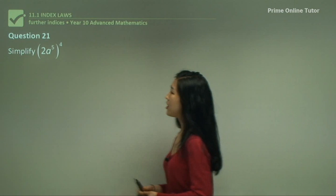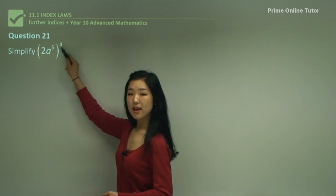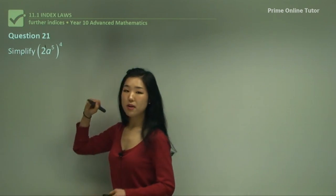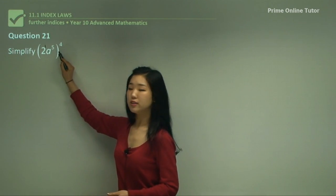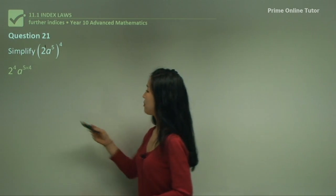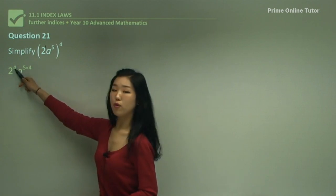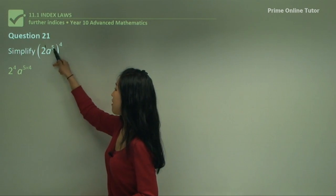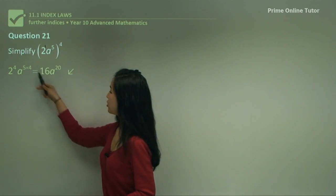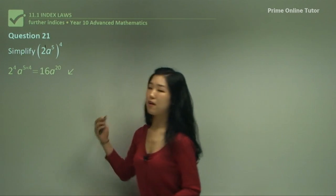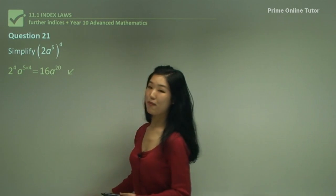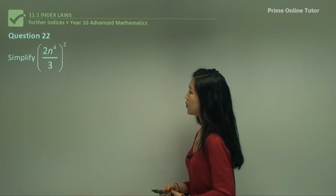Question twenty-one. Remember to multiply the two indices together, but if you have another term — see how it's 2 to the power of 1 — you must multiply 1 with 4 as well. You're multiplying the outer power to every single term's power inside the bracket. So it's 2 to the power of 1 times 4, which is 16, and then a to the power of 5 times 4, which is a to the power of 20.